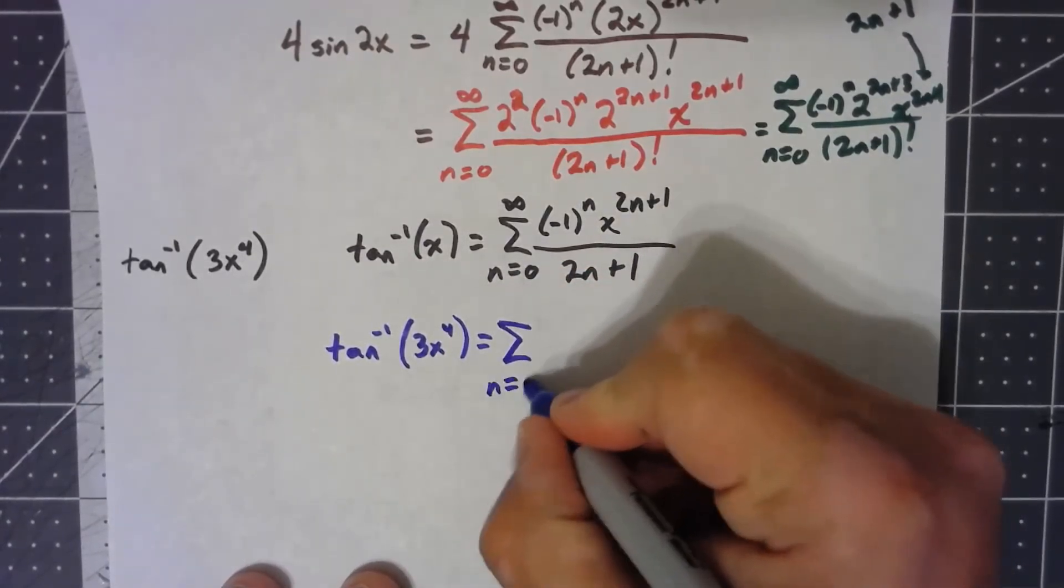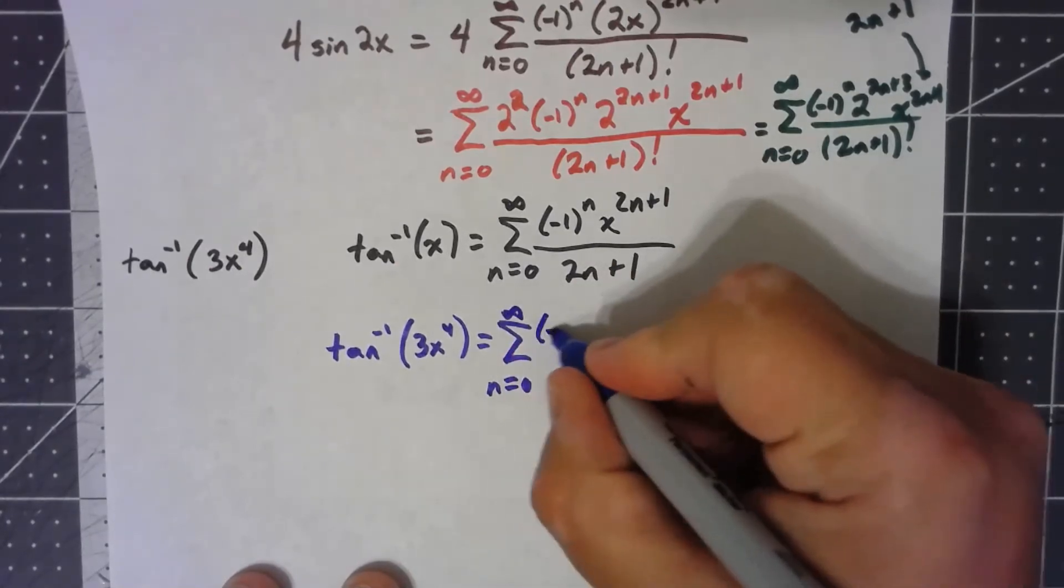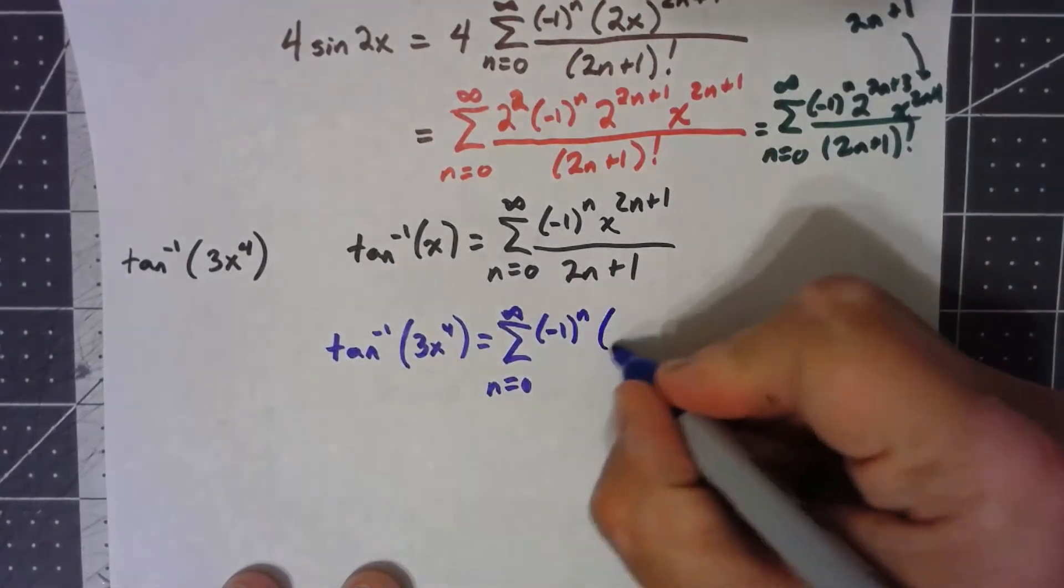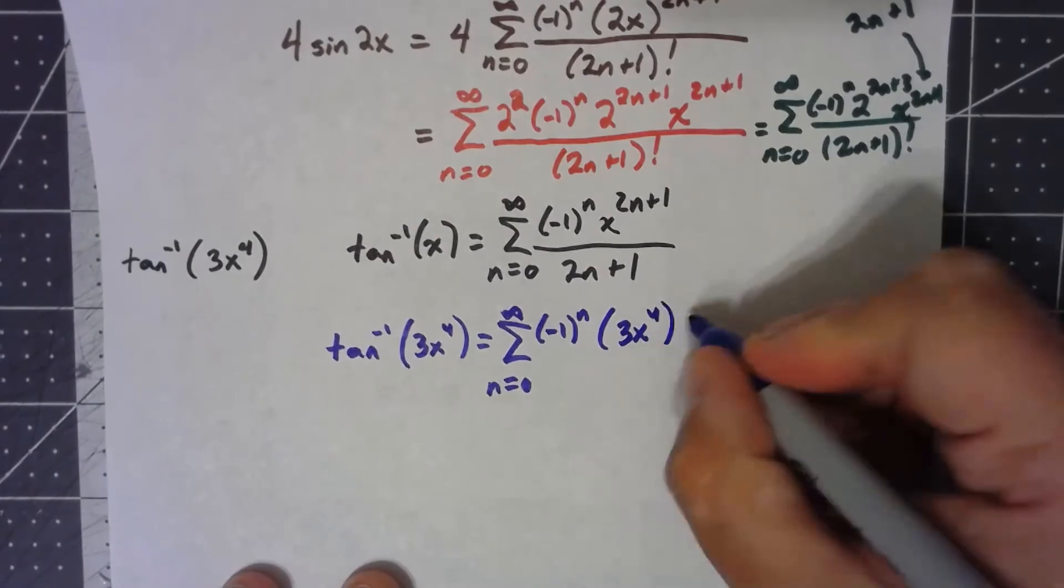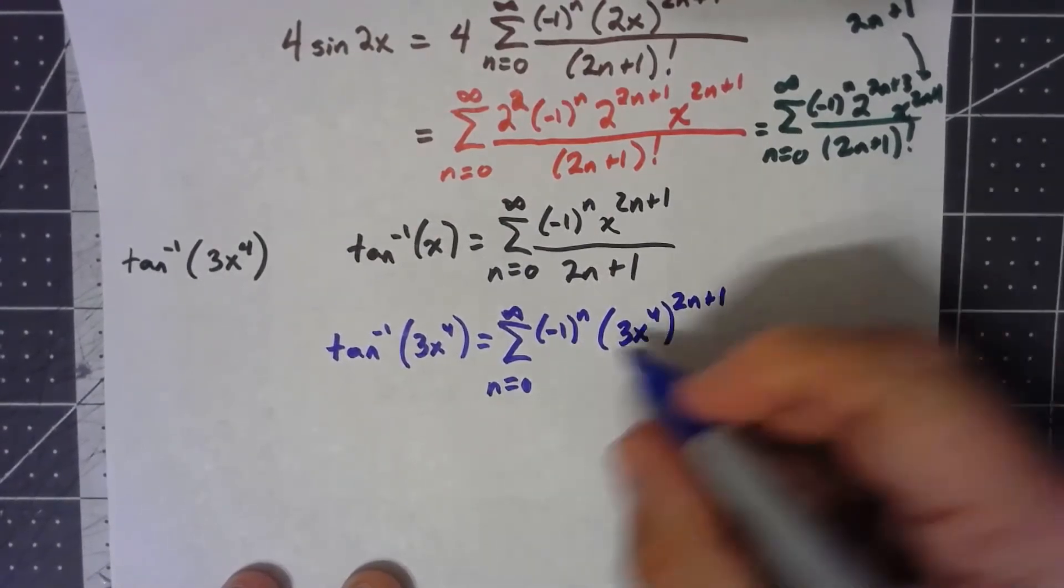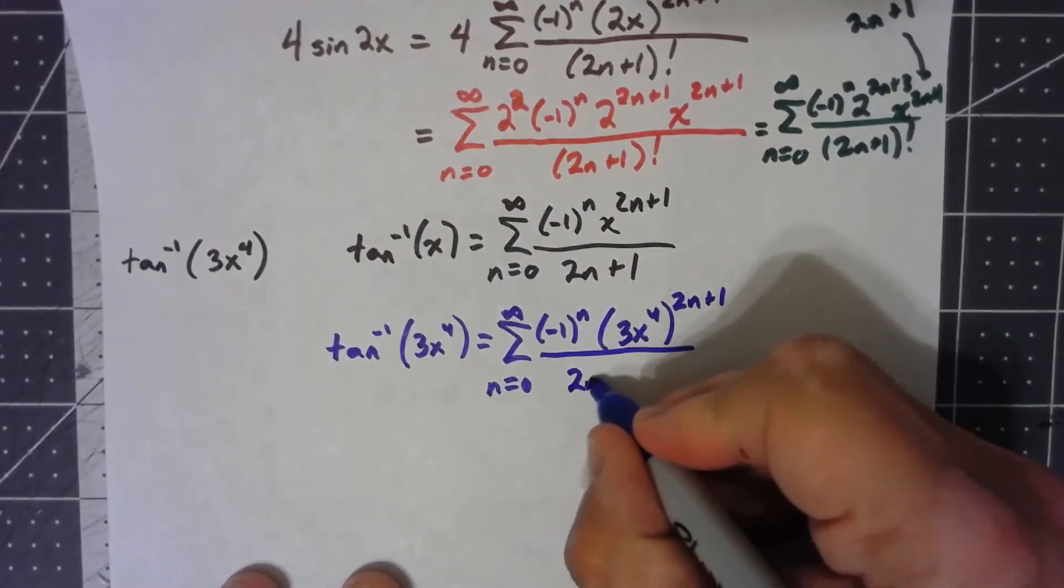We've got the sum from n equals 0 to infinity negative 1 to the n, we'll have a 3x to the 4th to the 2n plus 1 over 2n plus 1.